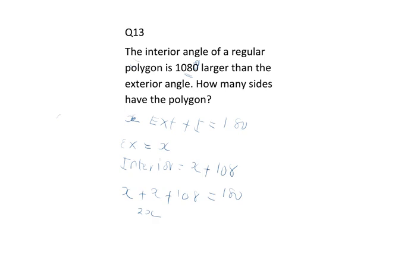2x plus 108 equals 180. Therefore, 2x will equal, moving this to the other side, we have 72.